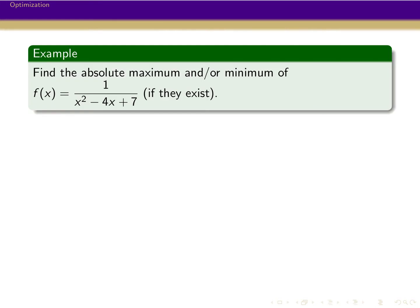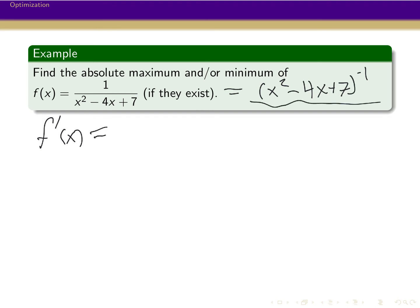So let's find the absolute maximum and/or minimum of this function: 1 over x squared minus 4x plus 7, if such a thing exists. The first thing we need to do is find the critical points, and to find the critical points we have to find the first derivative. We can think of the function as x squared minus 4x plus 7 raised to the minus 1 power, and then take the derivative using the chain rule.